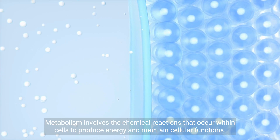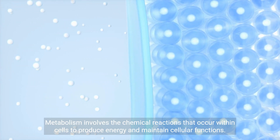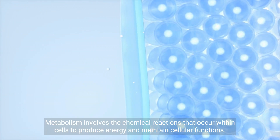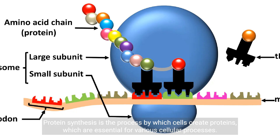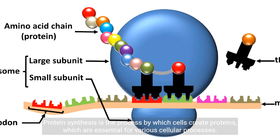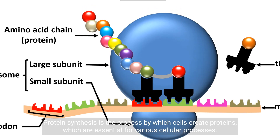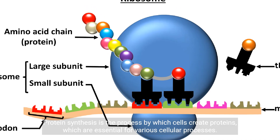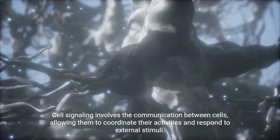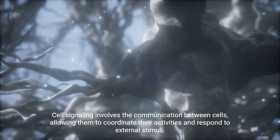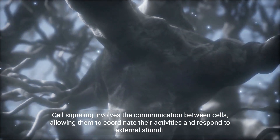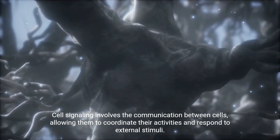Metabolism involves the chemical reactions that occur within cells to produce energy and maintain cellular functions. Protein synthesis is the process by which cells create proteins, which are essential for various cellular processes. Cell signaling involves the communication between cells, allowing them to coordinate their activities and respond to external stimuli.